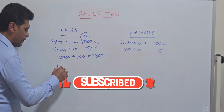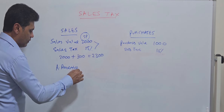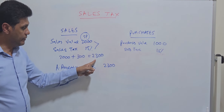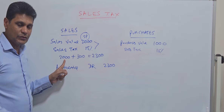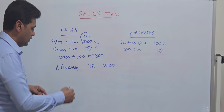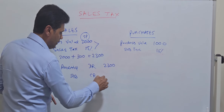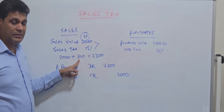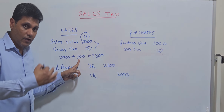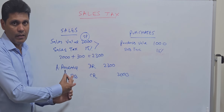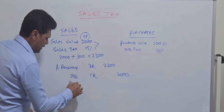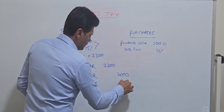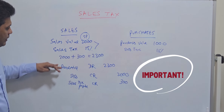Out of the 2300 received, 2000 is your actual sales revenue — so sales will be credited with 2000. The remaining 300, which is collected from customers on behalf of the tax authorities, is a liability. Therefore, sales tax payable is credited with 300. This is the double entry for your sales transaction.